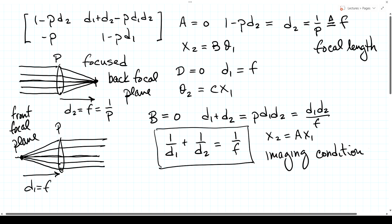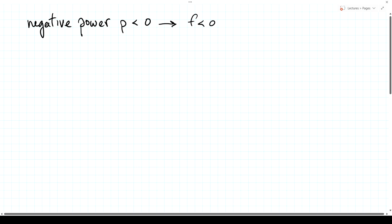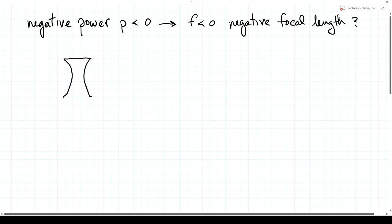So those are the interesting things for a single lens: the front and back focal planes, and the imaging condition. Now, we've talked about how it's possible to have a negative power — P less than zero. If that's true and focal length is 1/P, then the focal length would also be negative. Instead of a bi-convex lens, we might have a bi-concave lens. The first surface has a negative radius of curvature and the second has a positive radius, giving negative power.